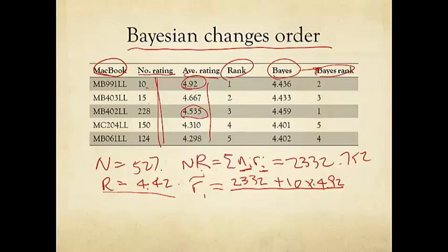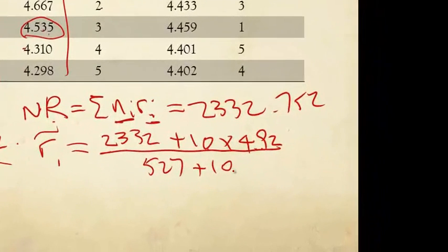10 is n1, 4.92 is r1. Divided by n, which is 527 total number of reviews, plus ni, the number of reviews for just this product, which is 10. So clearly this 10 times 4.92 is one of the five components of this term, and 10 is one of the five components of this term.